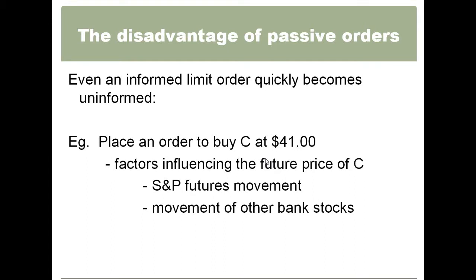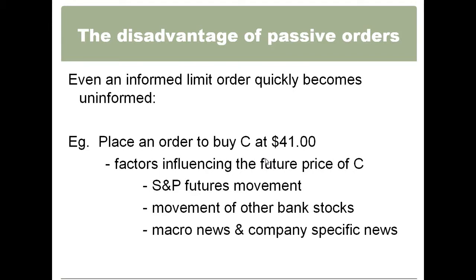Movement on other bank stocks — if JP Morgan starts to go down, your pair traders will turn around and hit stocks like Citigroup. Any other type of macro news, company-specific news — all kinds of different things are happening all the time. But once you place that limit order out there, it is no longer being adjusted for that new information. That's why high-frequency trading has come into being more than anything — because they quickly adjust their orders for all new information coming in.